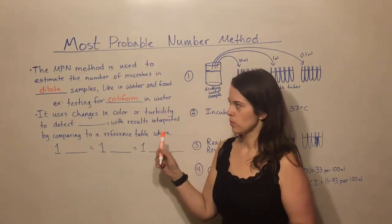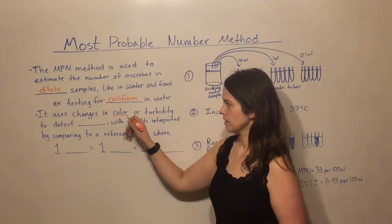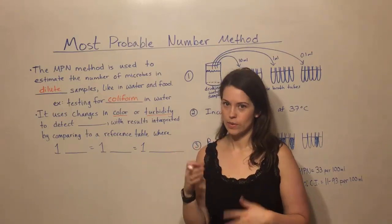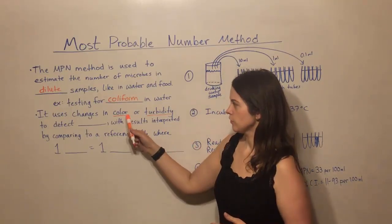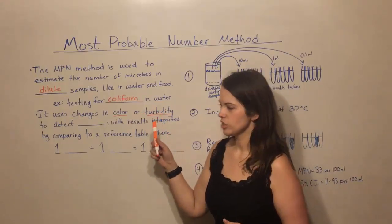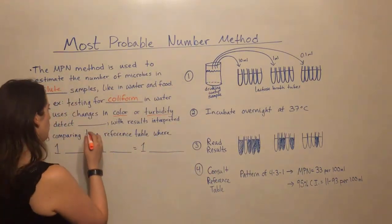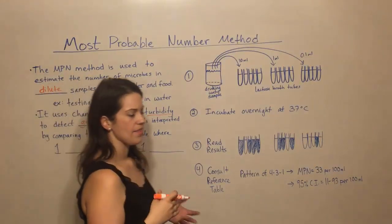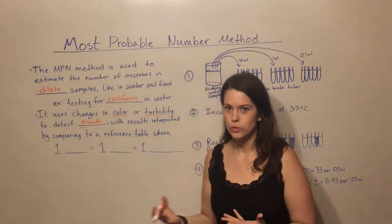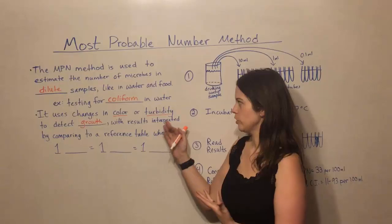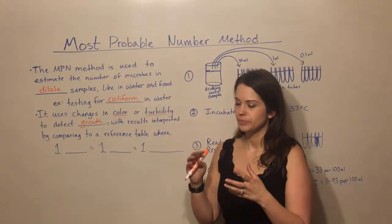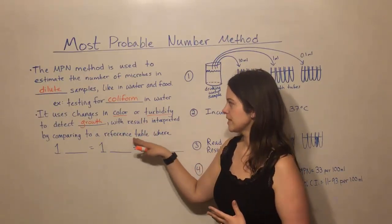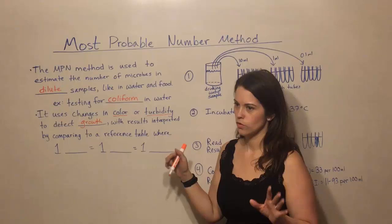The way the MPN method works is it uses changes in either color of broth or changes in turbidity. That's the cloudiness you see when bacteria are growing in liquid culture. So it looks for either color change or turbidity change to detect bacterial growth. Then you look at how many tubes either changed color or have noted turbidity, and you can count those tubes and interpret your results by comparing your results to a standard reference table.